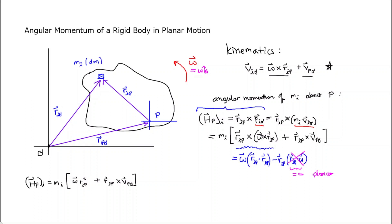Now at this point it's appropriate to take the sum over all such mass elements i, or integrate over all mass elements dm. So what we get is the angular momentum of the entire rigid body about our arbitrary point P. Omega is a constant for the whole rigid body, so I distribute: I have to integrate r_ip squared dm, or dm_i.